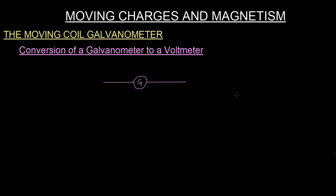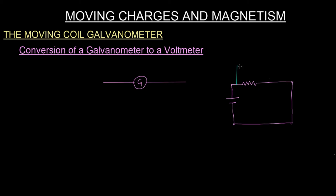A voltmeter is connected in parallel across the element or the resistance across which you want the voltage. For example, if I have a circuit and I am trying to measure the voltage across this resistor, I actually connect a voltmeter across it like this.